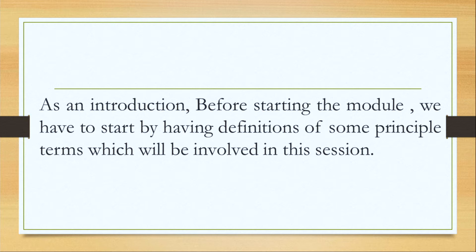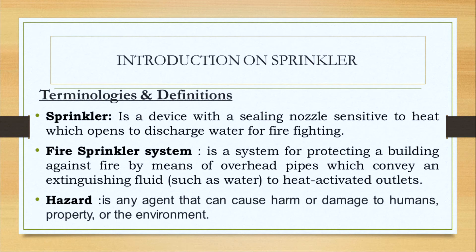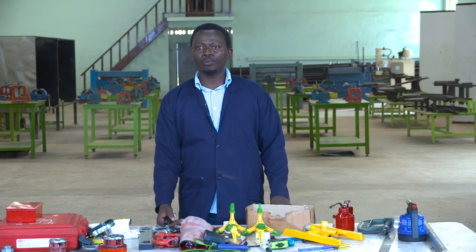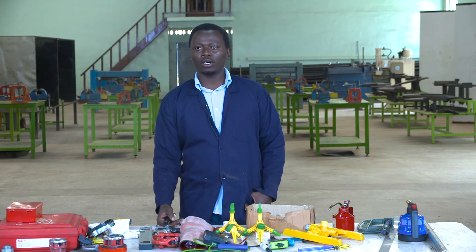As an introduction, before starting the module, we have to start by having definitions of some principles and terms which will be involved in this session. Here we have terminologies and definitions from this module. By definition, a sprinkler is a device with a steering nozzle sensitive to heat which opens to discharge water for fire fighting.